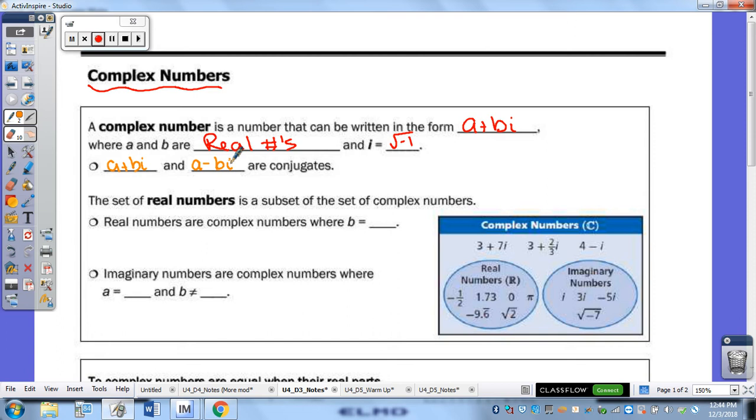So, the set of real numbers is a subset of the set of complex numbers, meaning real numbers are really complex numbers, but your B value is simply a zero. So, for example, let's say we have 4 plus 0I. Well, this means we really don't have any I, so that would just be gone. And you would just have the number 4. So, number 4 is a real number.